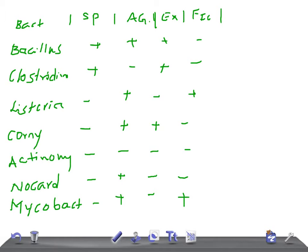Now acid-fast — this is very simple. Only two bacteria are acid-fast or partially acid-fast: Nocardia, which is partially acid-fast, and Mycobacterium. All the others are negative.